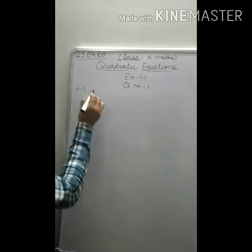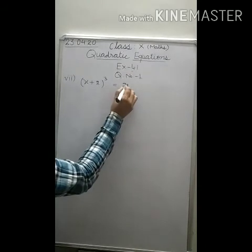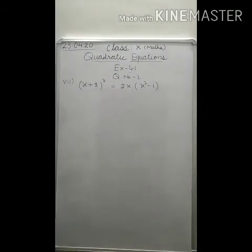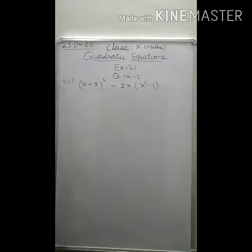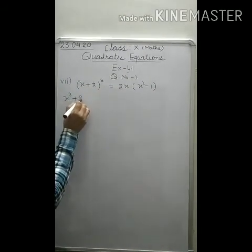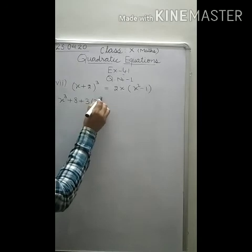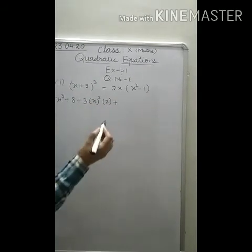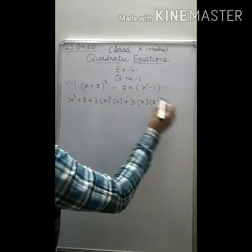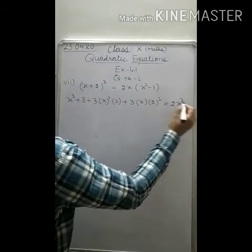In part seven, we are given: (X + 2)³ = 2X(X² − 1). We use the identity (A + B)³ = A³ + B³ + 3A²B + 3AB². Here A = X and B = 2, so B³ = 8, 3A²B = 3·X²·2 = 6X², and 3AB² = 3·X·4 = 12X. On the right side, 2X·(X² − 1) gives 2X³ − 2X.